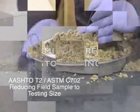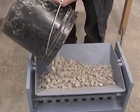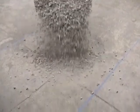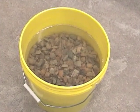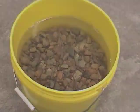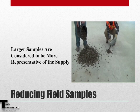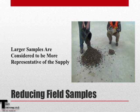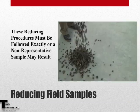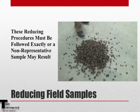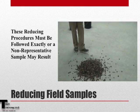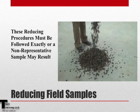The purpose of this practice is to describe procedures that will reduce larger field samples to a convenient testing size in a manner which makes the testing sample representative of the larger sample and hopefully of the entire aggregate supply. Generally speaking, larger samples are more representative of the aggregate supply than smaller samples. Therefore, if the procedures described in AASHTO T248 and ASTM C702 are not followed, the result may be a non-representative testing sample.